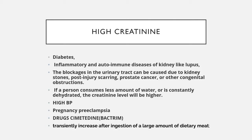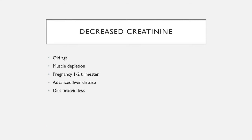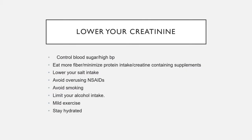During pregnancy, severe blood pressure rise can also cause kidney damage and elevated creatinine. Decreased creatinine conditions include old age, muscle loss, depletion, first and second trimester of pregnancy, liver diseases, advanced liver diseases, and low dietary protein consumption.